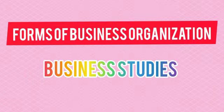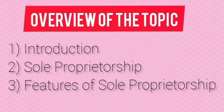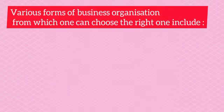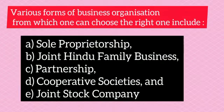Forms of business organization — a business studies overview. If one is planning to start a business or expand an existing one, an important decision relates to the choice of form of organization. The various forms of business organization from which one can choose include: sole proprietorship, joint Hindu family business, partnership, cooperative societies, and joint stock company.